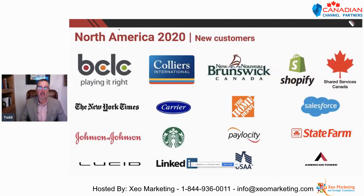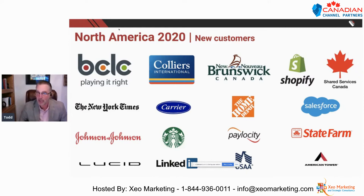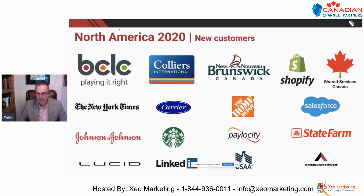In North America in 2020, we had a number of really nice wins. In Canada: British Columbia Lottery, Collier's International, New Brunswick Government, Shopify, and Shared Services Canada across a number of rollouts. You can also see Johnson & Johnson, Starbucks, Home Depot, and State Farm. Notice there's not one particular vertical market — it's very horizontal. It's anyone who has network infrastructure out at the edge with a router or switch.